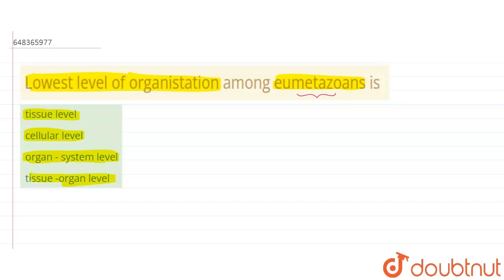The umetazoans are a group of multicellular organisms, excluding the porifera and the placozoa. They generally exclude the porifera and the placozoa.